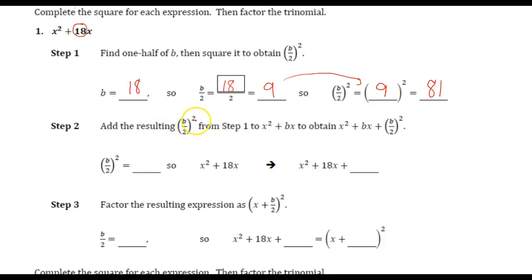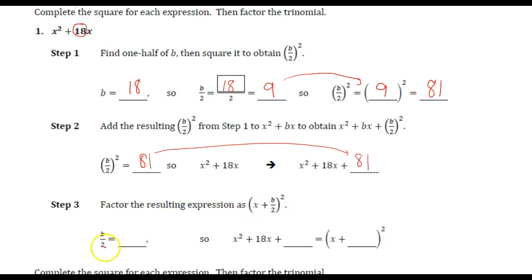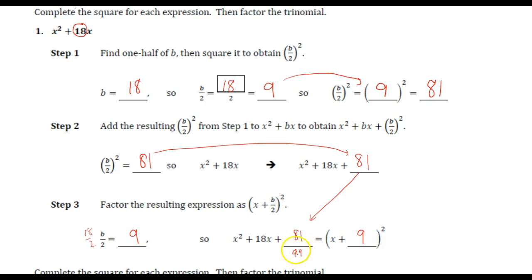It says add the result — b divided by 2, squared — to step 1. We found that to be 81, so we're going to add it, that 81 we found. Then they ask us to factor the expression. Remember, 18 divided by 2 is 9. So x squared plus 18x plus 81 equals x plus 9 squared, because 9 times 9 is 81, and 9 plus 9 is 18. They add to get 18 and multiply to get 81.